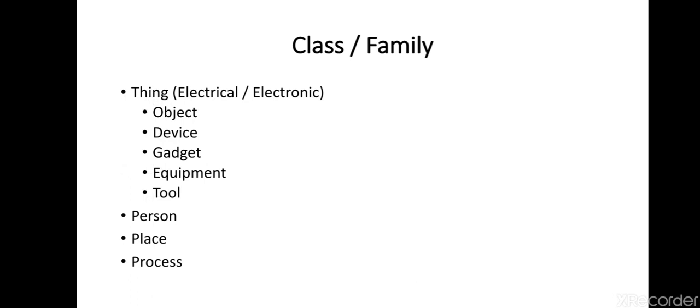How do we classify the given word? It can be a thing, person, place, or process. If it is a thing, it can be electrical or electronic. Or we can say it is an object.